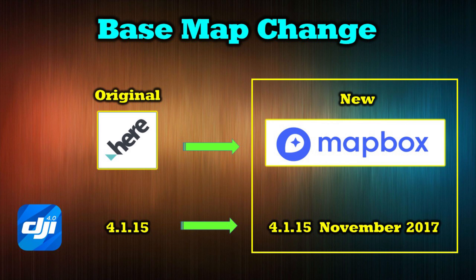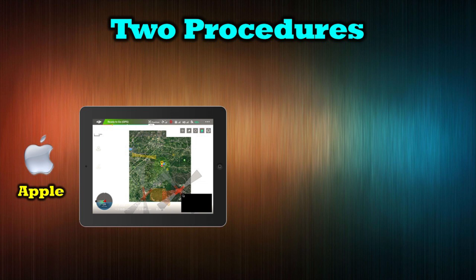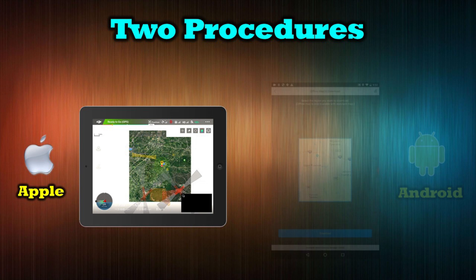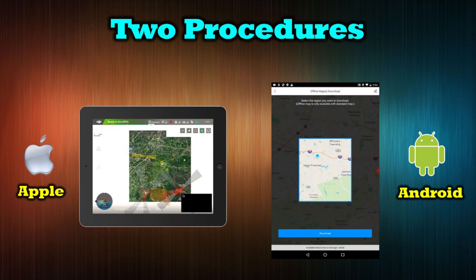The last wrinkle is that there are actually two different procedures depending on the device you're using. If you're using an Apple device, you're caching that map into non-persistent storage, but you can get better granularity out of it. If you're using an Android device, you're not actually caching the map — you're downloading it, and it's going to stay persistent on your device. The challenge is there's a limited amount of persistent memory DJI can use for storing those maps, so you can't get as big a chunk of area. Both procedures are different but end up with the same result.